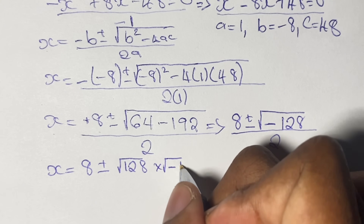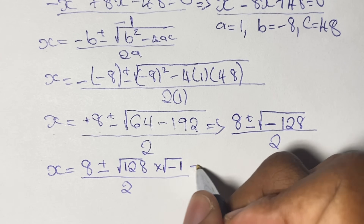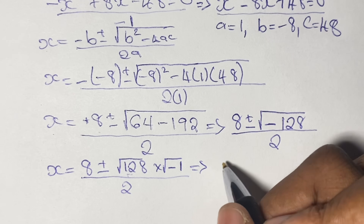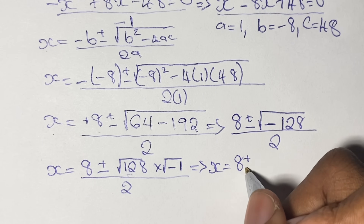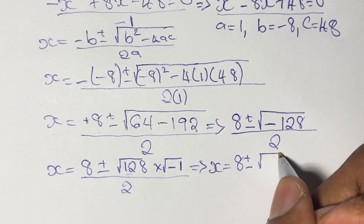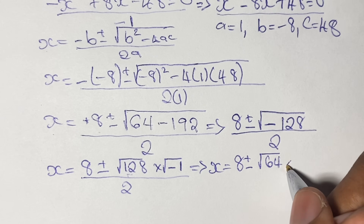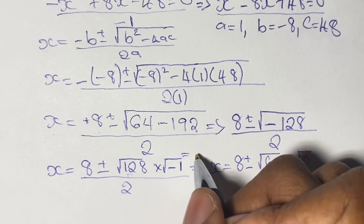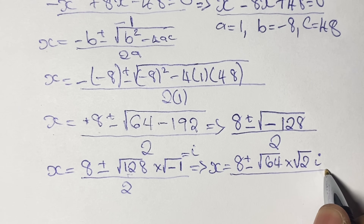We handle this by writing the square root of negative 128 as the square root of 128 times the square root of negative 1. We then factor 128 as 64 times 2, so we have the square root of 64 times the square root of 2 times i, since the square root of negative 1 is the imaginary number i. All of this is divided by 2.